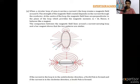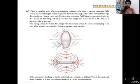The strength of the magnetic field created depends on the current through the conductor. At the center of the loop, the magnetic field lines are perpendicular to the plane of the loop, which provides the magnetic moment M = I × A. This is the magnetic moment.